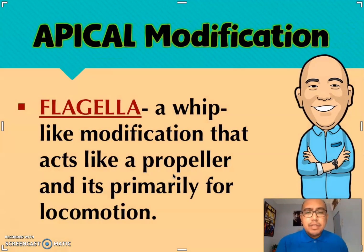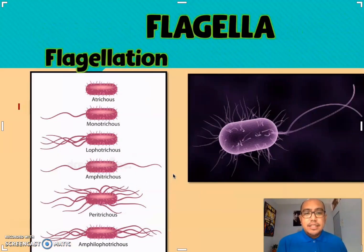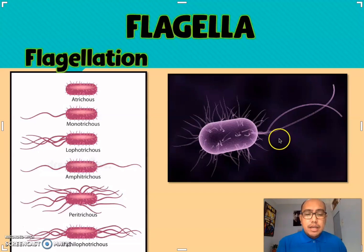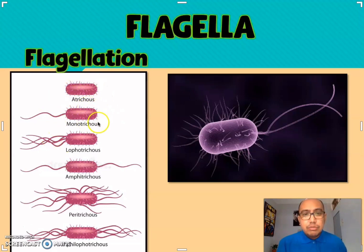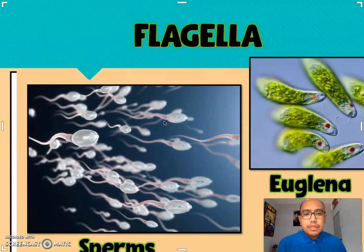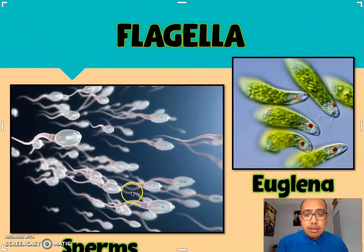The second type of apical modification is the flagella — this is a whip-like modification that acts like a propeller and is primarily for locomotion or movement. This is the typical structure of a flagella, but there are different types of flagellation: we have the atrichous, the monotrichous, lophotrichous, amphitrichous, peritrichous, and the amphilophitrichous. Flagella can be seen in the sperm cells of males and in lower organisms such as euglena.